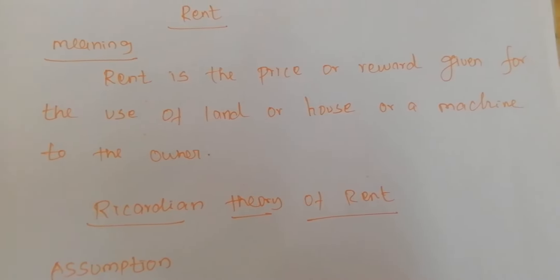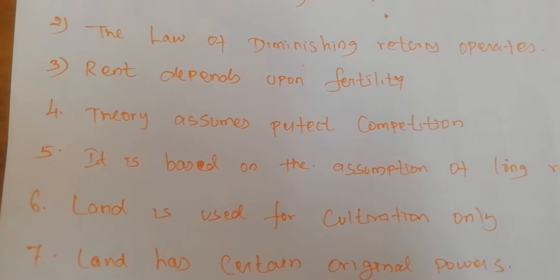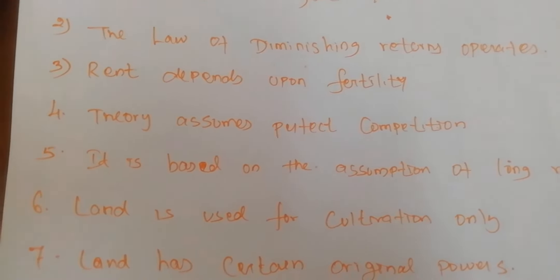The first assumption is that land differs in fertility — on the basis of land, it differs in terms of fertility. Next, the law of diminishing returns operates: when we use land continuously, the productivity of the land diminishes. Next, rent depends upon fertility, so more fertile land gets more rent.